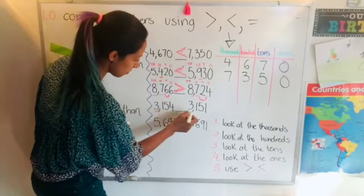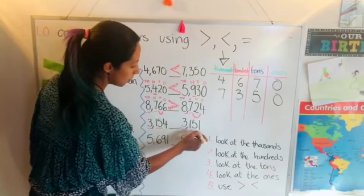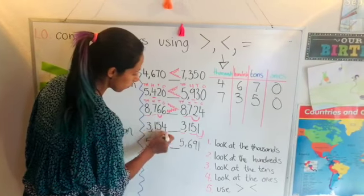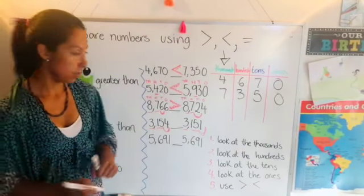Next one very quickly. First number same, second same, third same. Let's go to the ones. Which one is greater, four or one? Four.